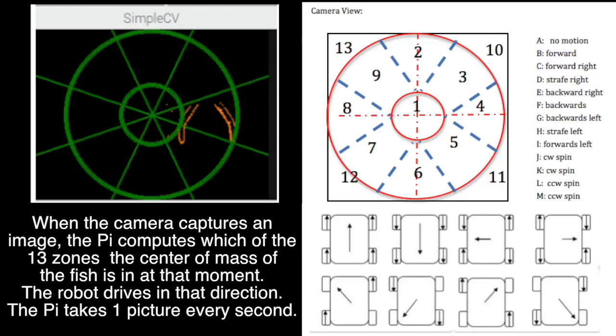When the camera captures an image, the Pi computes which of the 13 zones the center of mass of the fish is in at that moment. The robot then drives in that direction. The Pi takes one picture every second.